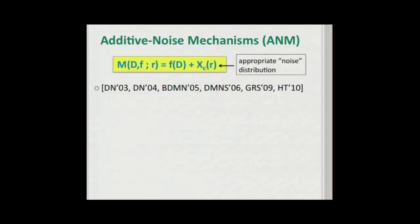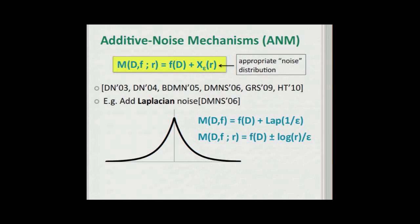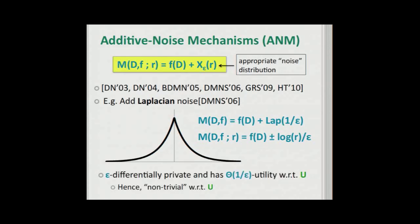Let me show you an example of non-trivial mechanisms — the so-called additive noise mechanisms. They follow this template: compute the true answer to the query F(D), then add noise from an appropriate distribution. A simple example is using the Laplace distribution with mean zero and standard deviation of order 1/epsilon. The work of Dwork et al. in 2006 showed that this mechanism is epsilon differentially private and has order-1/epsilon utility with respect to the uniform distribution. Therefore, by our definition, these are non-trivial mechanisms with respect to uniform.